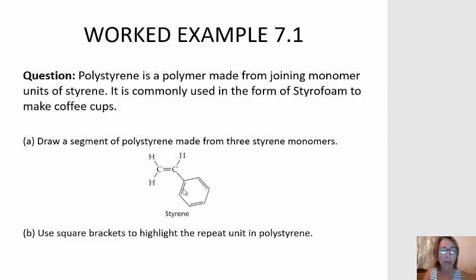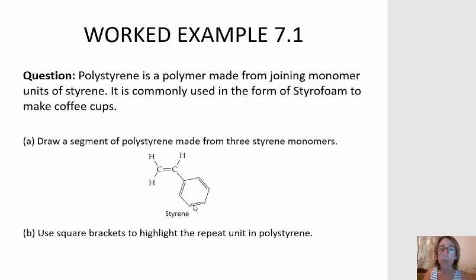I just want to point out that in this graphic, this hexagon has three double lines. They look like double bonds, but they are not. Benzene does not have three double bonds. There is a special type of bonding going on here, known as resonance.